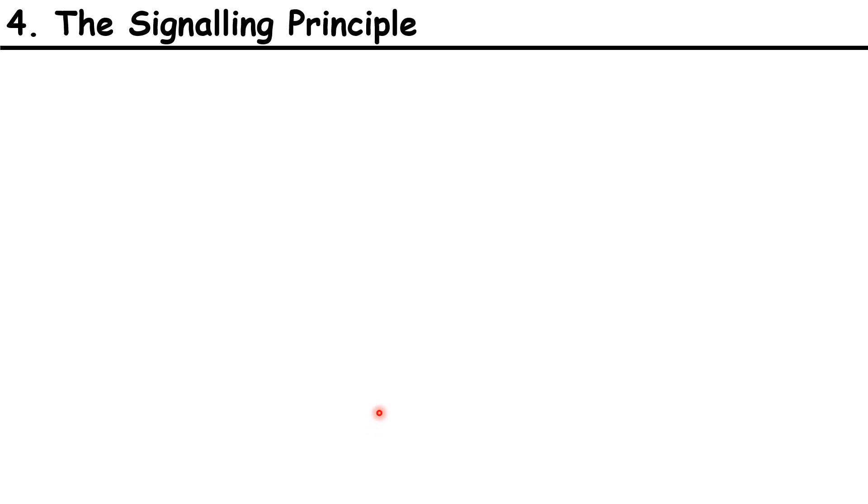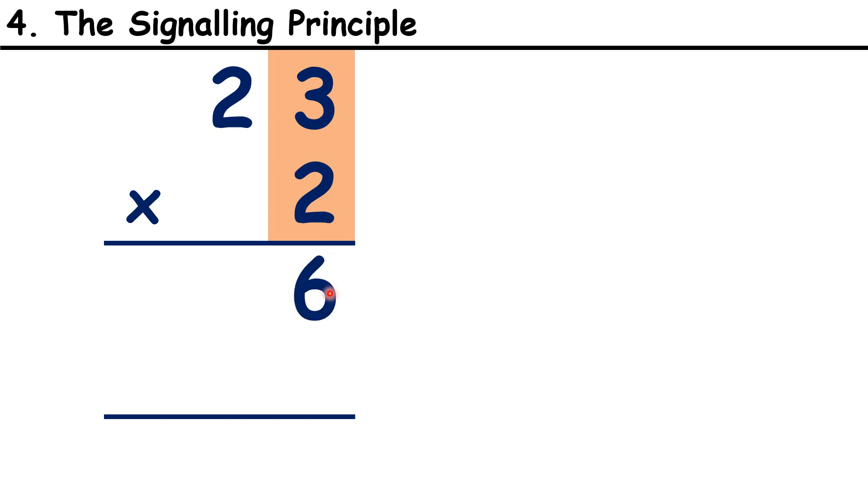In the question I just went through, the explanation would probably still be unclear to most children because I ignored our fourth principle, the Signalling Principle. As you go through the steps, you need to highlight what step you're on so that it's clear for the children, or at least use a pointer like the red pointer I have here. This makes it clear to children where they should be directing their attention at any given time.